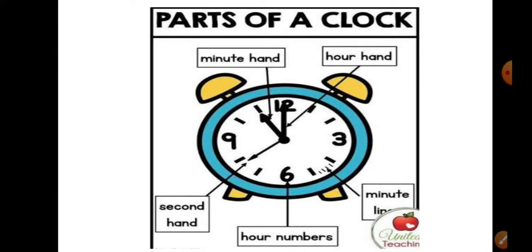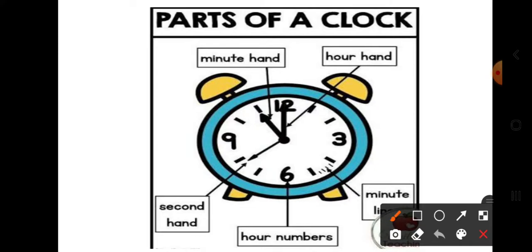First, as a revision of what we have done in EVS — parts of a clock. We all know the big hand; the small hand is the minute hand. One more very thin hand you can see on the clock which moves very fast is the second hand. There are 12 numbers on the face of the clock, and this clock moves two rounds to complete 24 hours in one day.